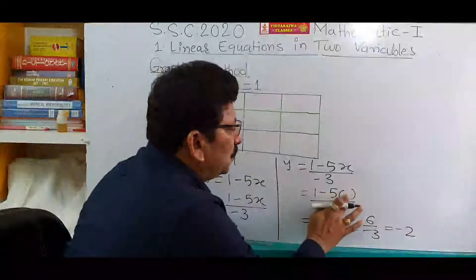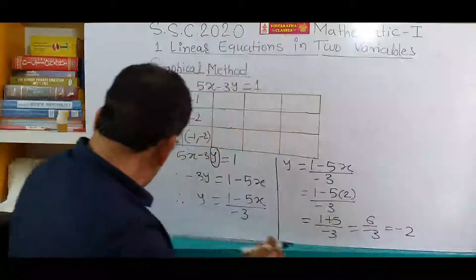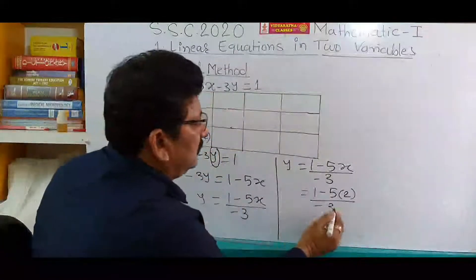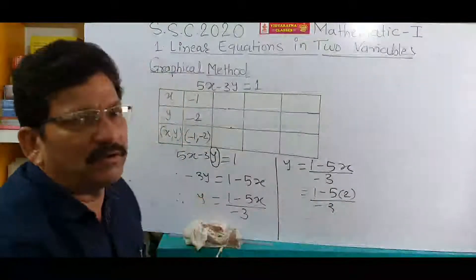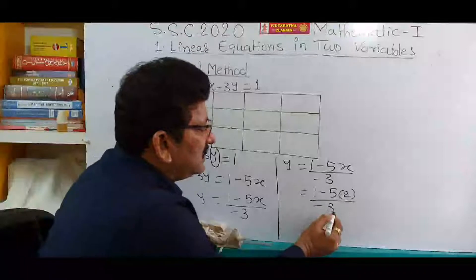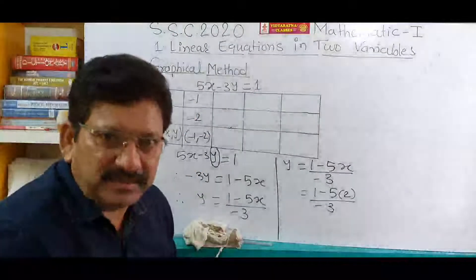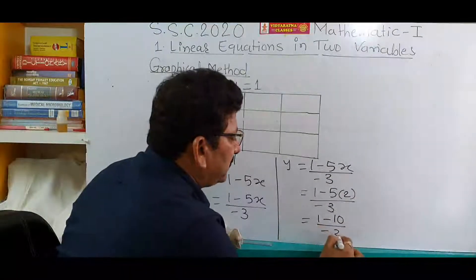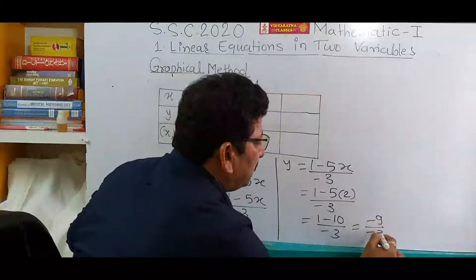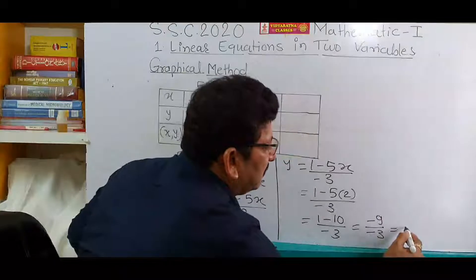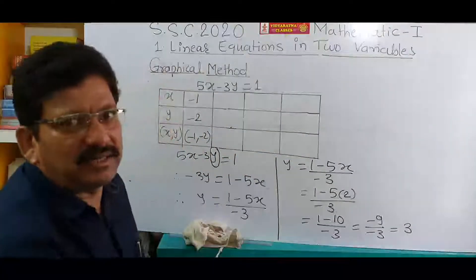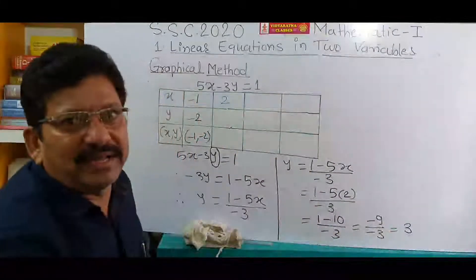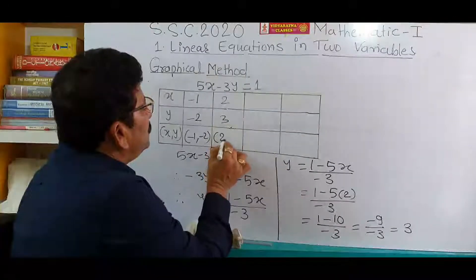Go for 2: if you write x equal to 2, then 5 twos are 10, and 10 minus 1 is 9. Nine is a multiple of 3, so x equal to 2 works. So (1 minus 10) divided by minus 3 is minus 9 divided by minus 3, and minus over minus becomes plus, so it is plus 3. You have got a second ordered pair: x is 2 and y is 3, therefore the ordered pair is (2, 3).